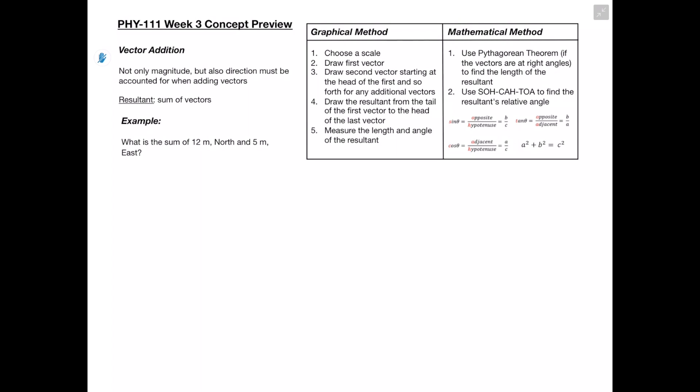Hey guys, thanks for watching. In this video we're going to be going over the week 3 concepts for physics 111. Starting off with vector addition, the reason why we need to go over this is because it's not as easy to add vector quantities as it is scalar quantities. When we add vectors together, the sum is called the resultant, and there's both a graphical and a mathematical method of doing this.